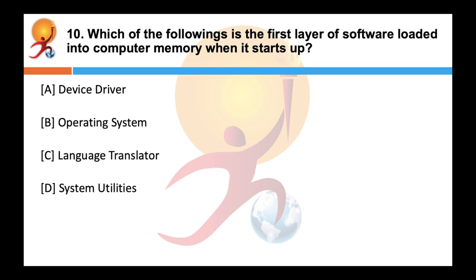Which of the following is the first layer of software loaded into a computer memory when it starts up? Correct answer is an operating system. An operating system is a system software that manages computer hardware and software resources and provides common services for computer programs.